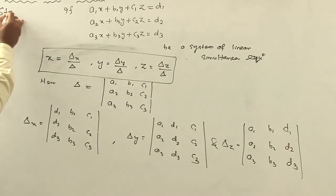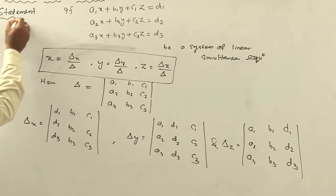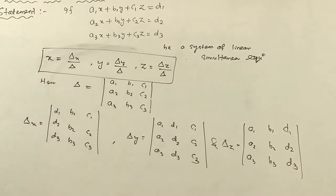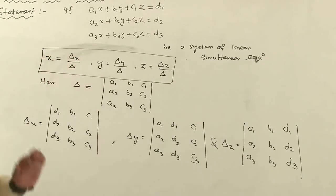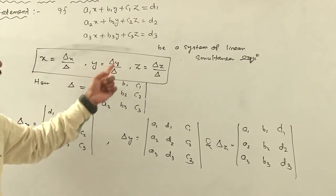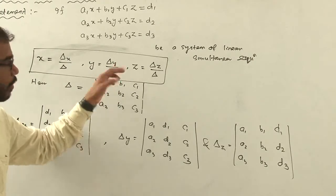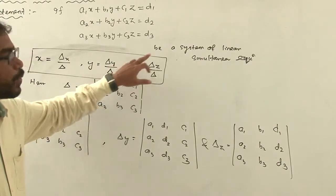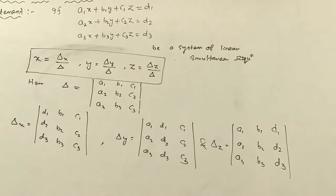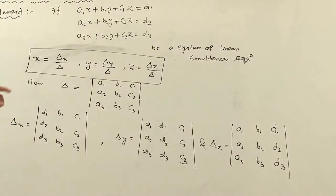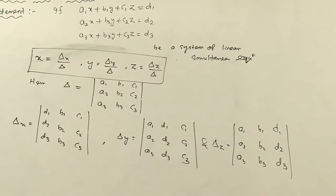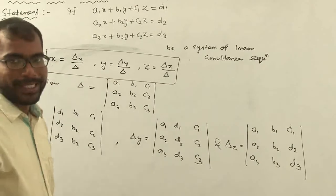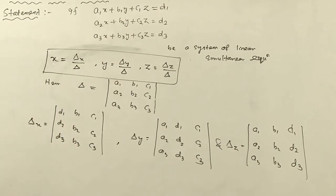So this is the statement of Cramer's rule. Now we have to prove it — that x is equal to Del x by Del, y is equal to Del y by Del, and z is equal to Del z by Del. So now we have to prove it.